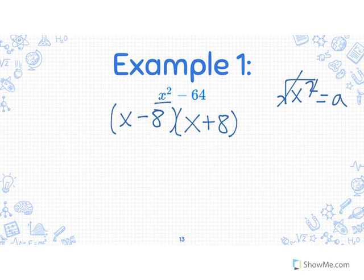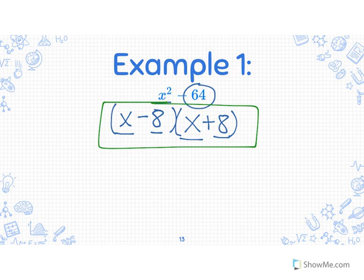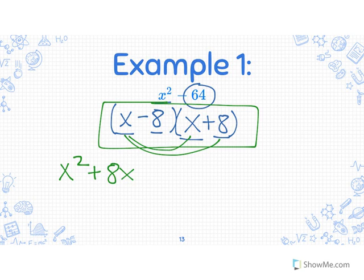Going back and looking at this: a is the first term, that gets plugged in for the a's. The second term gets plugged in for the b's. So we substitute those values in for each of the variables — first term is a's, second term is b's. Now we check our answer by distributing: x times x is x squared. x times positive 8 is positive 8x.